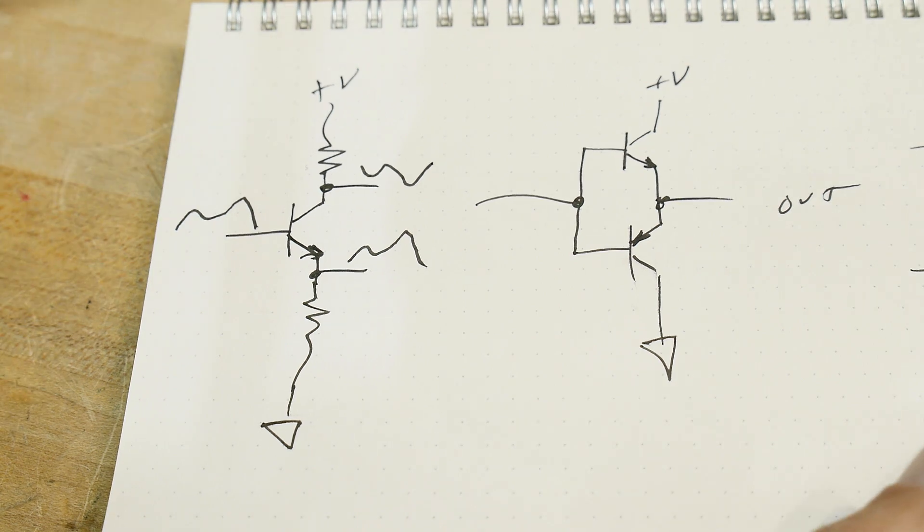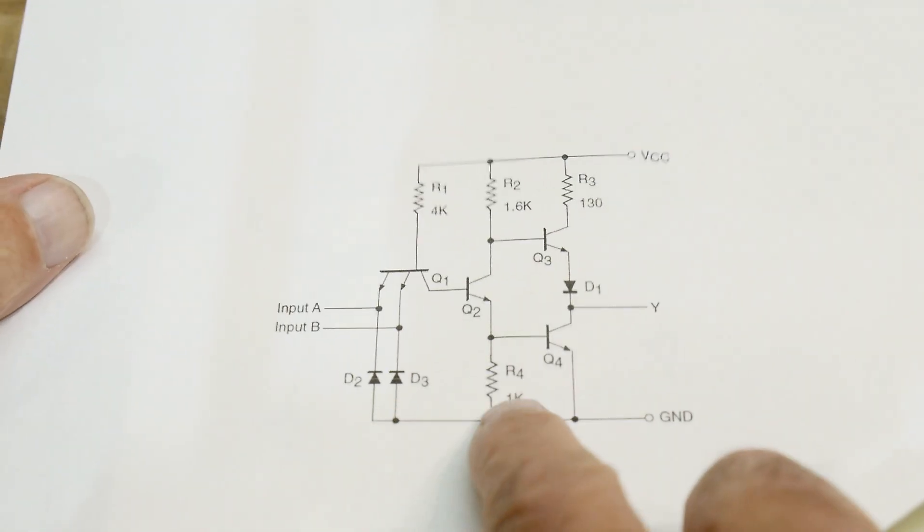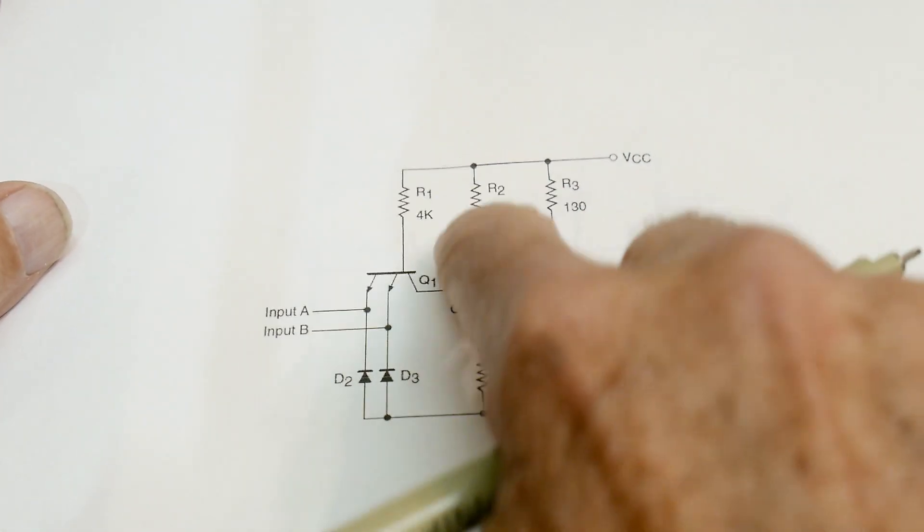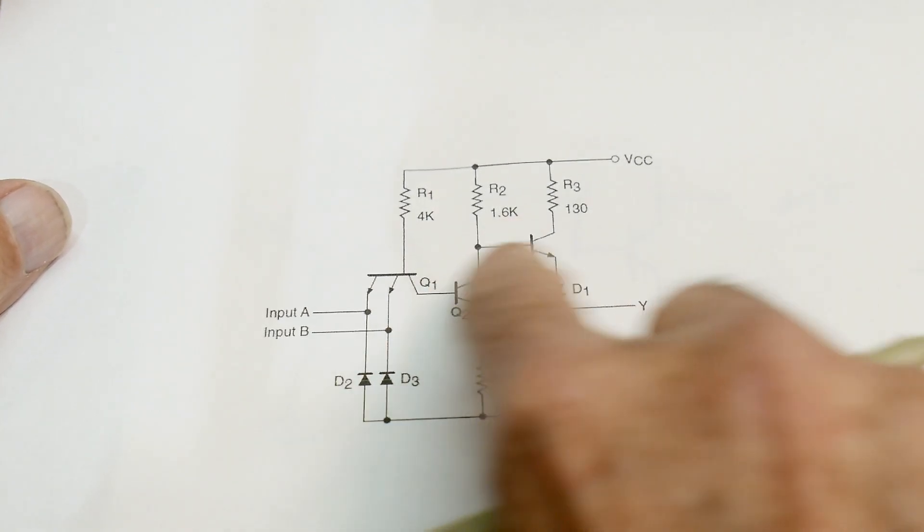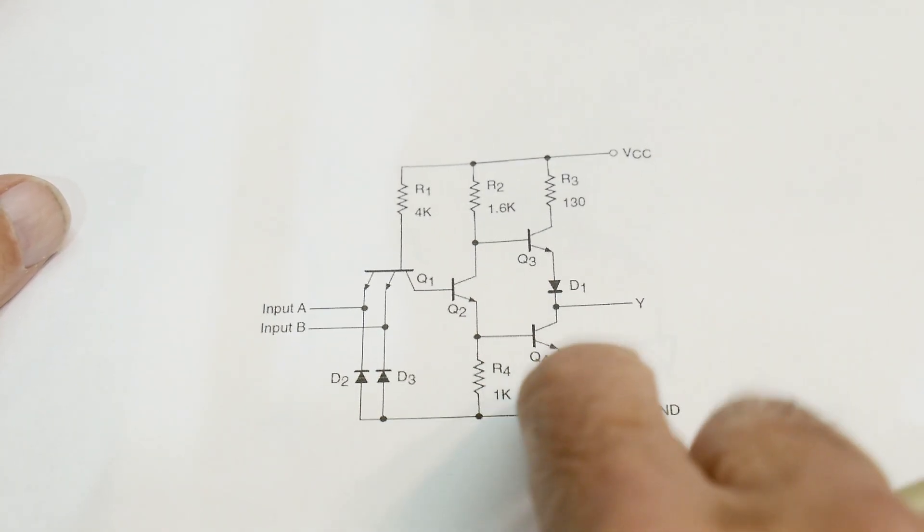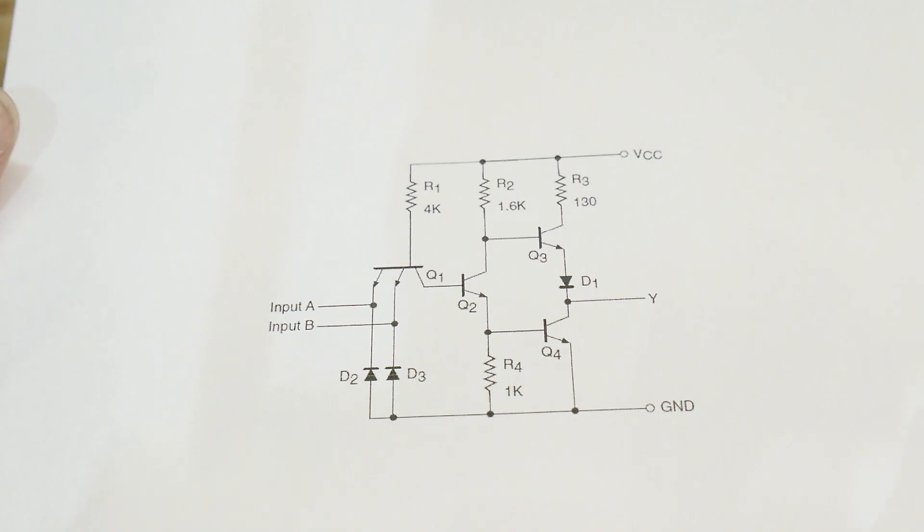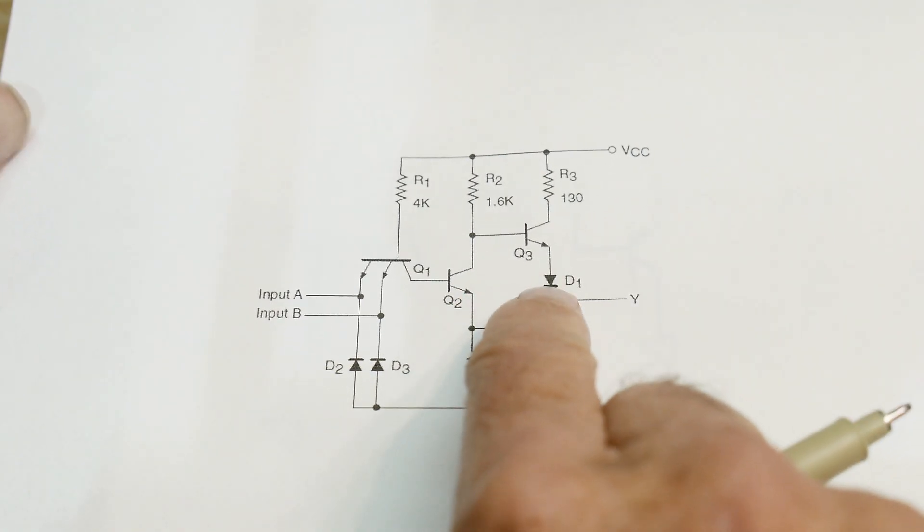These two waveforms will be mirror images of one another by this phase splitter. That's what they used here - they used a phase splitter and then they ran the up things over here and the down things over here and that works. Now you say, wait a minute, what's that diode?